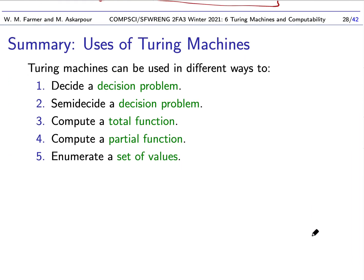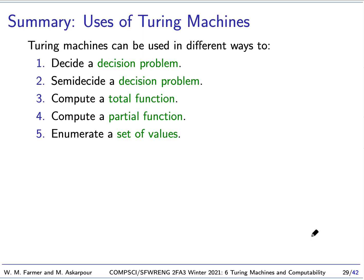Let's summarize a little. We have seen various uses of Turing machines. We can decide a decision procedure with the Turing machine. Here, in this case, we use a total Turing machine. We can semi-decide a decision procedure. This is when we just use a Turing machine that may not be total. It may loop.